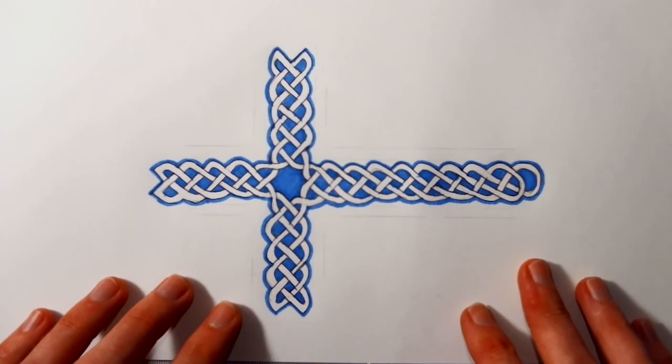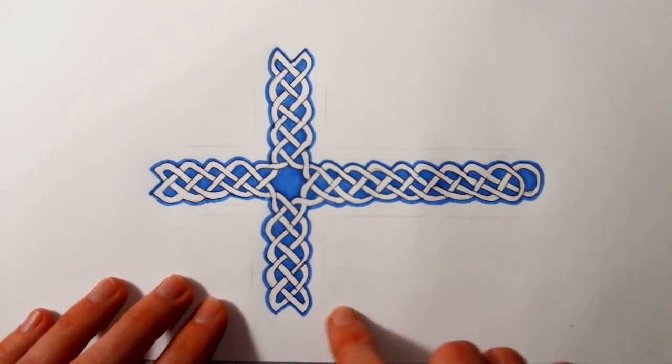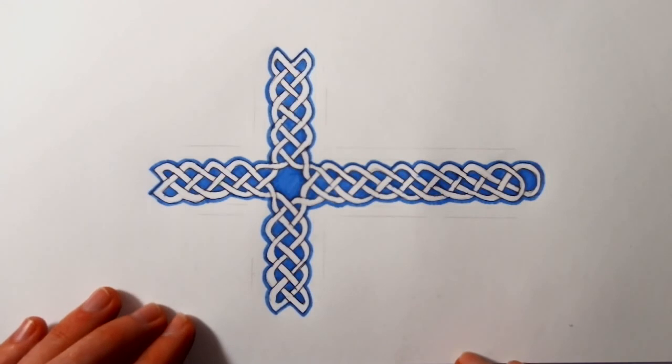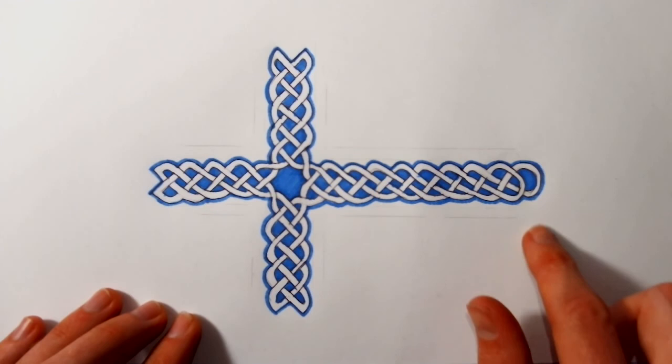So that's the Celtic knot done. Now I'll add two red rectangles and two red squares to turn it into a Norwegian flag. Well, not really a Norwegian flag, more like a Norwegian flag look-alike.